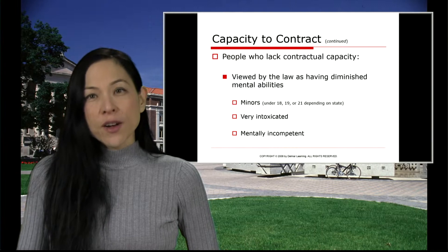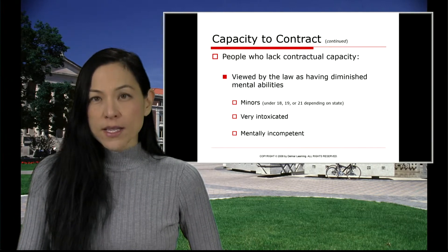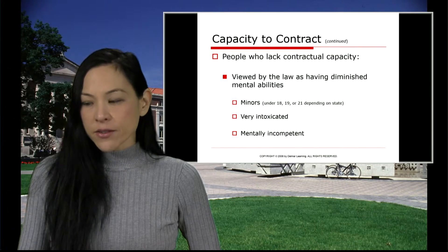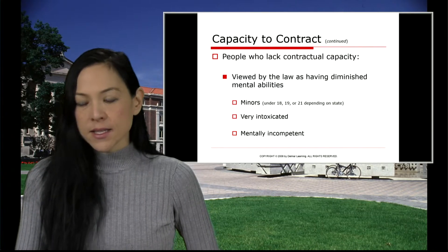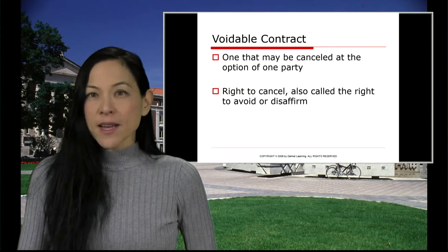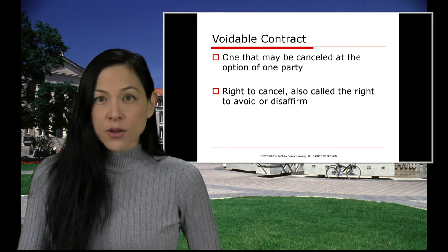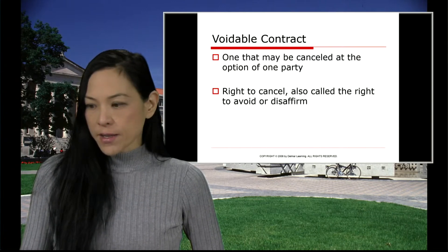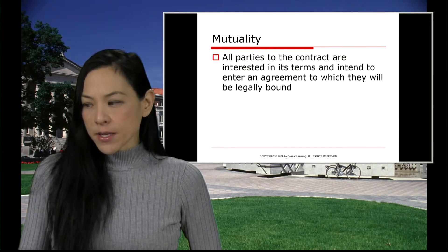If a contract has occurred, what is legal and what is not? First of all, if the person was a minor under the age of 18, was highly intoxicated, or mentally incompetent, that contract does not exist — it was an unfair type of contract and therefore there is no contract.